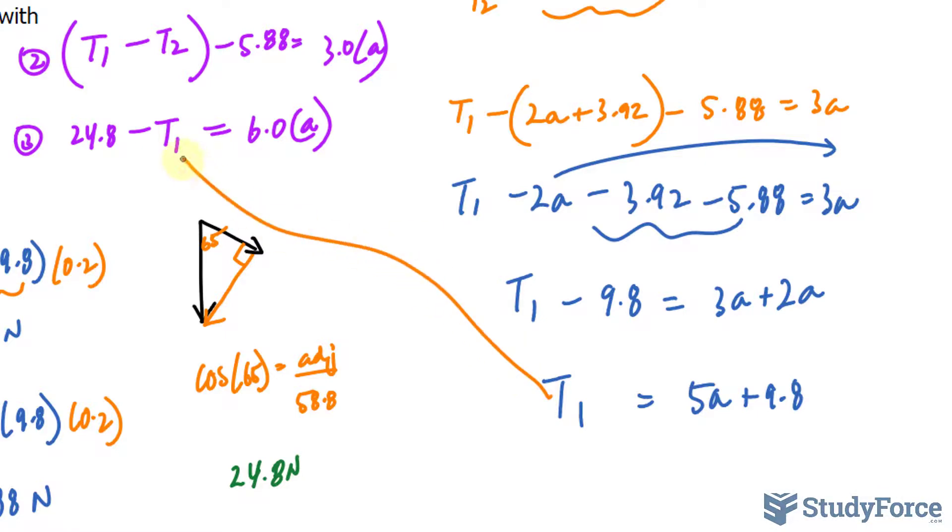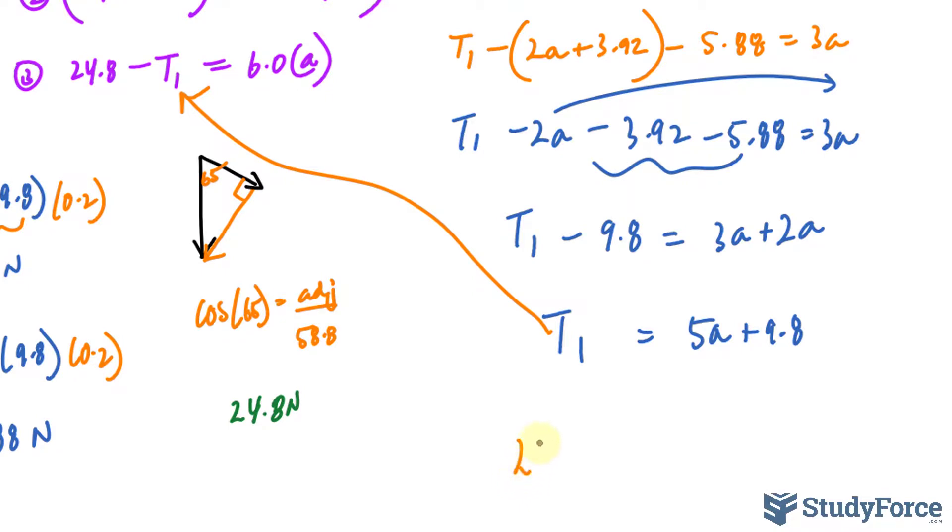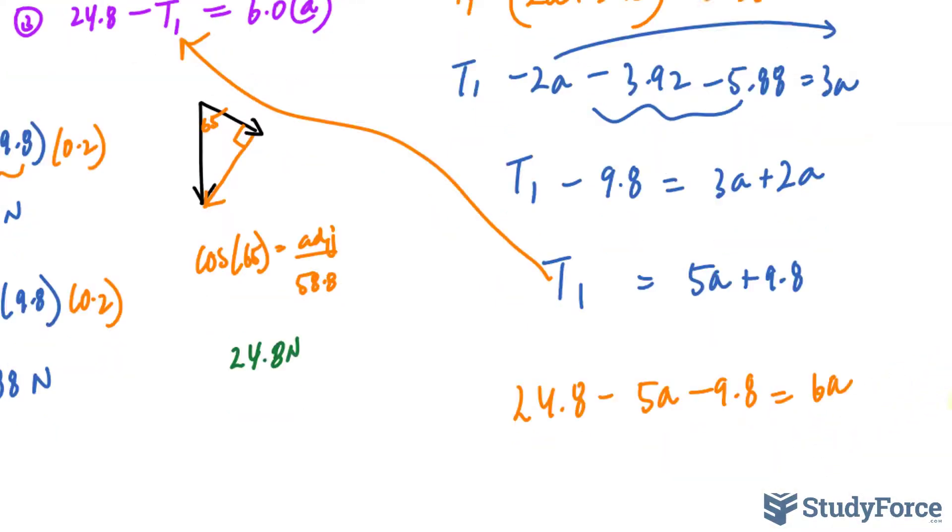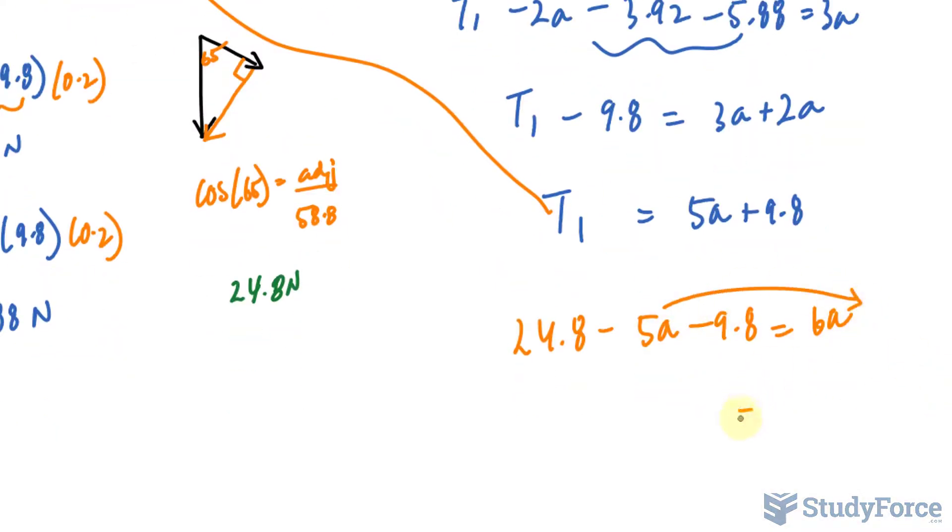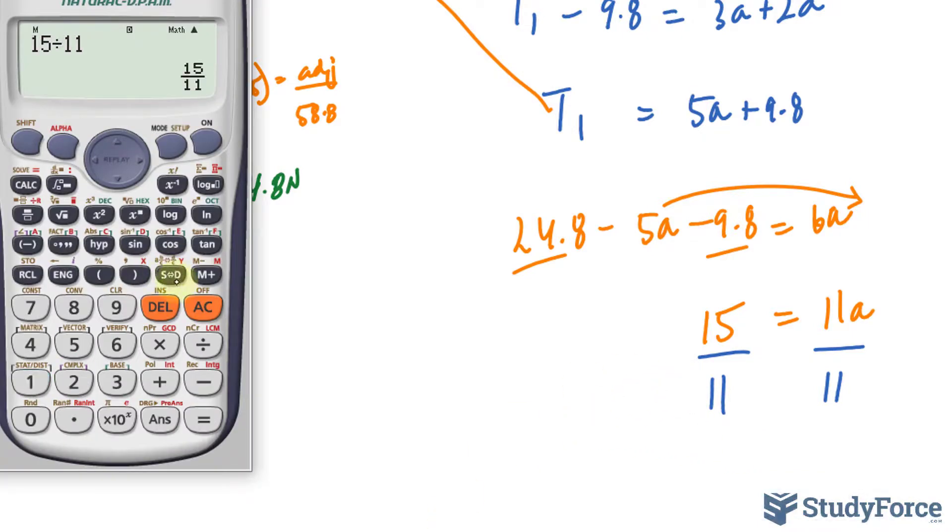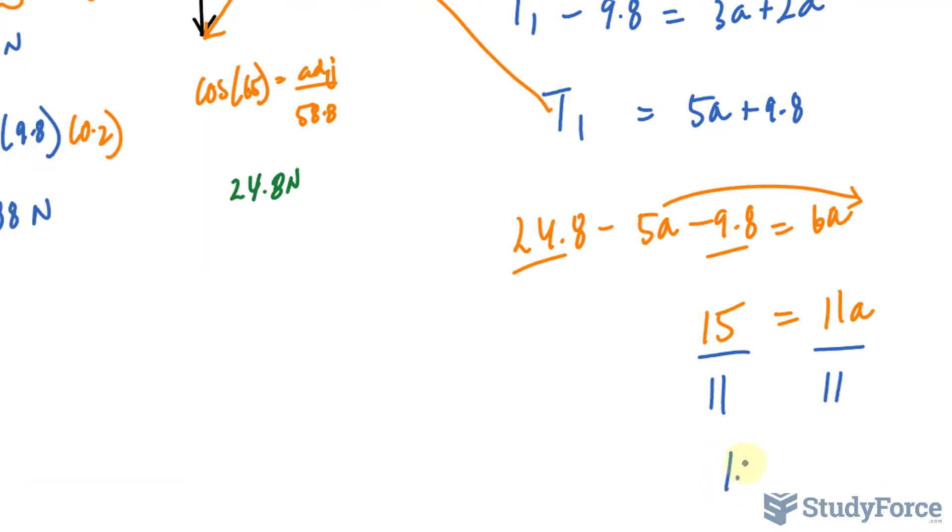And finally, I can substitute this value, this expression into here to find out what my acceleration is. So 24.8 minus these two. So both of these get a negative is equal to 6A, bringing again this term over. We get 6 plus 5 is 11A. And combining those, we should end up with 15. Dividing both sides by 11 gives us a value of 15 divided by 11. The answer is 1.4 meters per second squared.